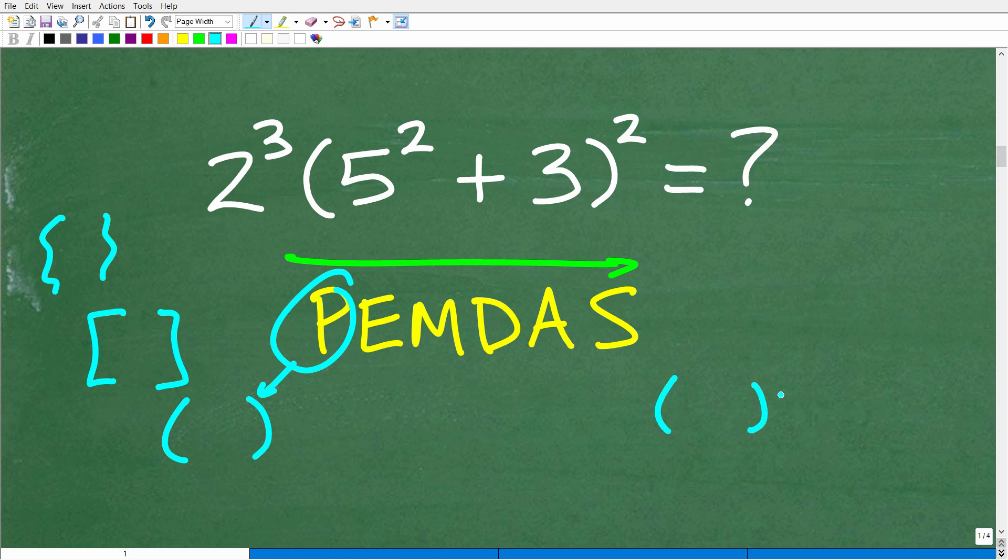Now, sometimes you have multiple sets of grouping symbols in a math problem. So you might have parentheses inside of brackets. So what you do there is you finish, well, you go to the innermost parentheses, do all that math and just kind of work your way out from inside out. Okay, and you're not really done with this step until all the math that is inside of those parentheses is taken care of.